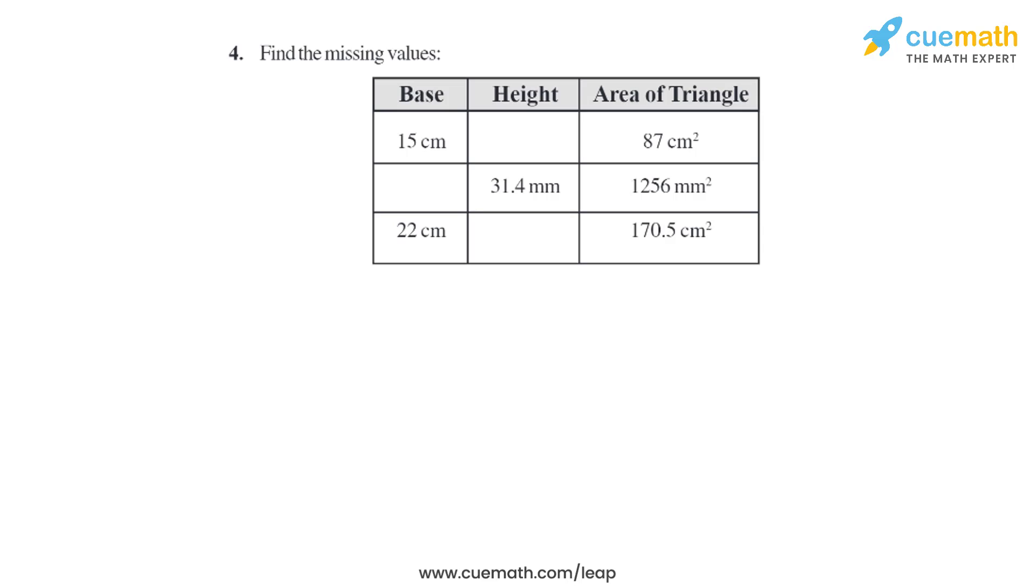Question 4 of this exercise says find the missing values. Let's start with the first part. In the first part, area of triangle is given, base is given, and we know that to find the area of triangle there is one formula: half into base into height.